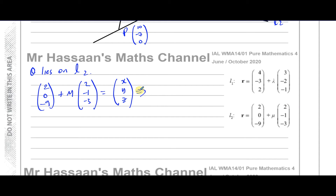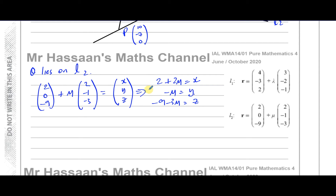From the equation of L2, I can extract three equations: X = 2 + 2mu; Y = 0 minus mu = -mu; and Z = -9 minus 3mu. The second piece of information is that PQ is perpendicular to line 2.